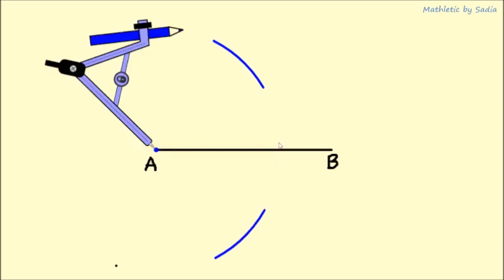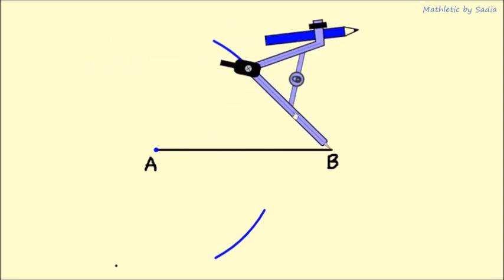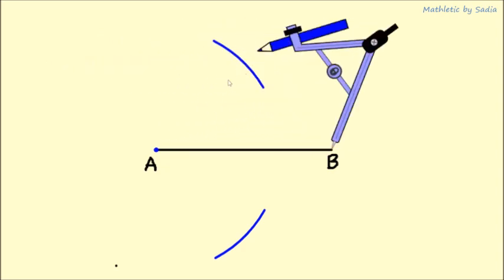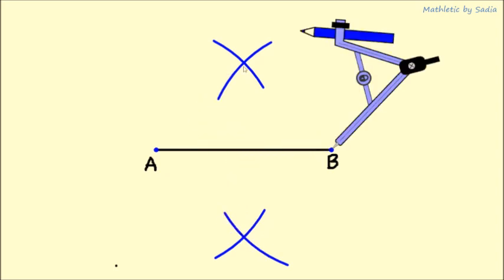Now we will repeat the same process from the other end. I will place the pointed part at B and draw two arcs, one above the line and another below the line.